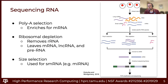When setting up a differential expression study, we need to consider how we're going to generate these libraries. There are three basic methods. PolyA selection will pull down everything with that polyadenylated tail on the mature mRNA, enriching for mRNA and leaving out things like long non-coding RNA and small non-coding RNA.